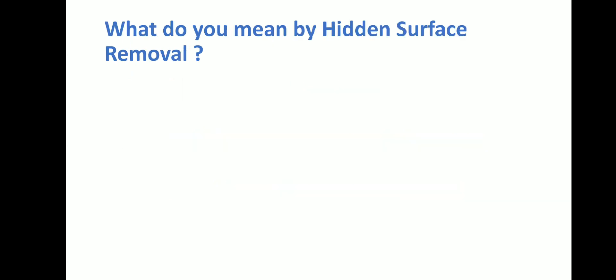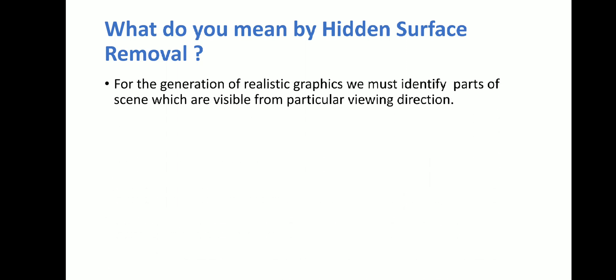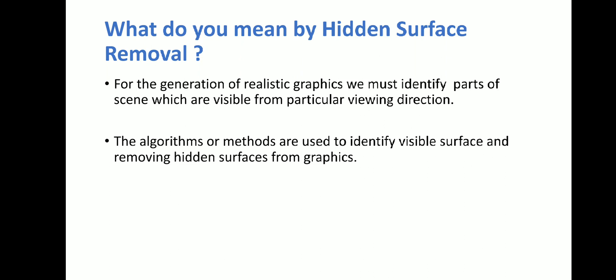Here we will discuss what is meant by hidden surfaces and how they will be removed. For the generation of realistic graphics, we must identify the parts of the scene or objects which are visible from a particular viewing direction. If somebody is at one place, they can view some objects while some objects are hidden behind others. That is how we find hidden surfaces from a particular direction. When we say removing an object, it does not mean removing it from the graphics — we keep it hidden, and when the viewing direction changes, that object may come into the picture or be a front object. So sometimes that object may be hidden and sometimes it may be in front, based on the viewing direction.